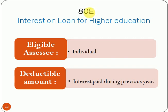Next is deduction under Section 80E, for interest on loan for higher education. If the assessee takes a loan for higher education for their children or for himself, then he can claim the interest on that loan as a deduction under Section 80E. The eligible assessee for this deduction is individual only, not HUF. The deductible amount under this section is the full interest paid during that previous year — the whole amount of interest paid is deductible.